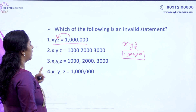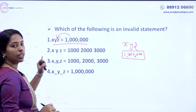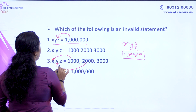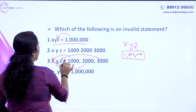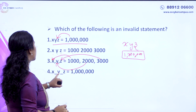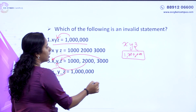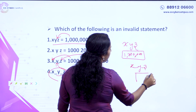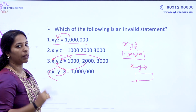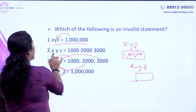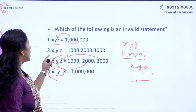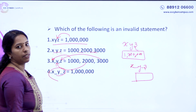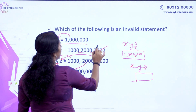This will check numbers up to 1,000,000. 1,000, 2,000, 3,000. X, y, z is one variable. This is an invalid statement.